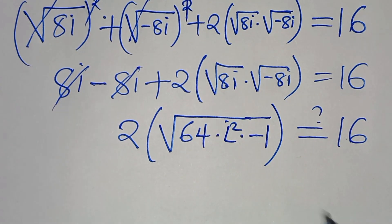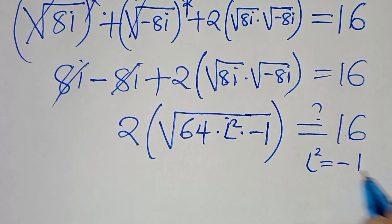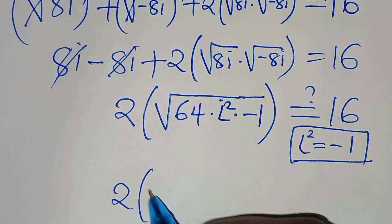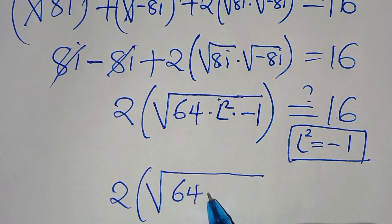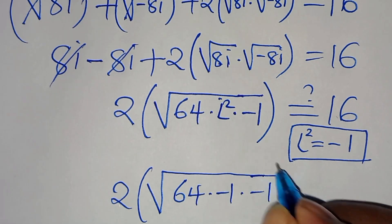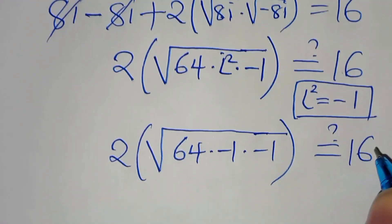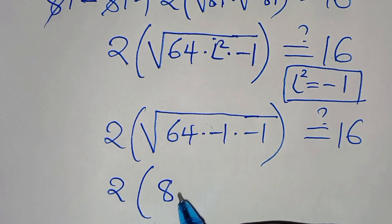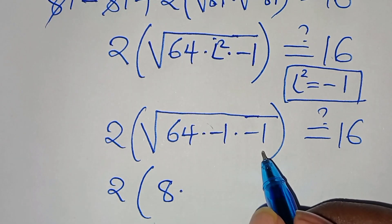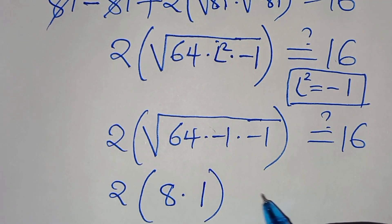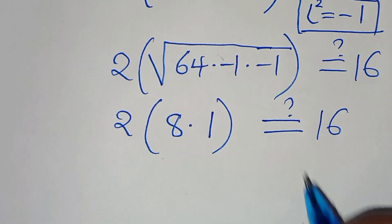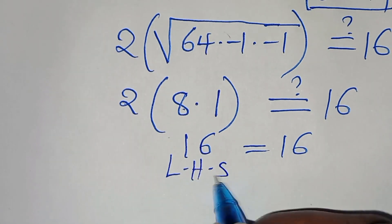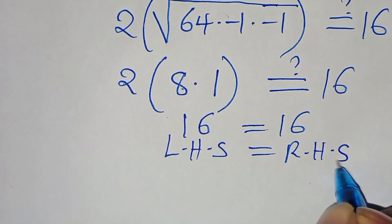Since i squared equals minus 1, substituting gives the square root of 64 times minus 1 times minus 1, which is the square root of 64 times 1, equal to the square root of 64, which is 8. So we have 2 times 8, which equals 16. The left hand side equals the right hand side, confirming k1 equals 8i satisfies the equation.